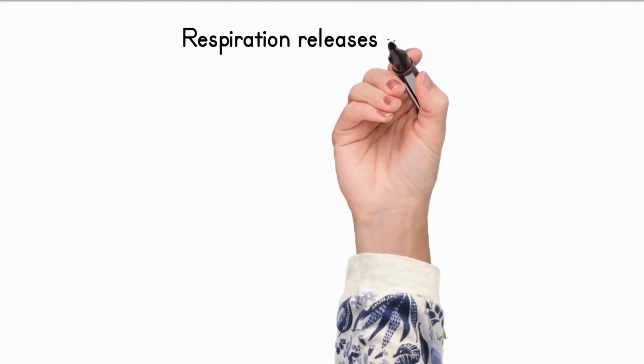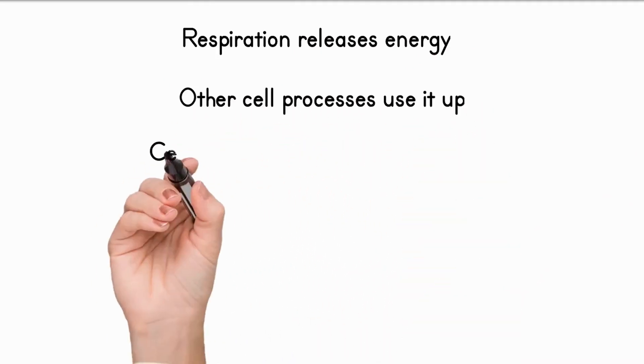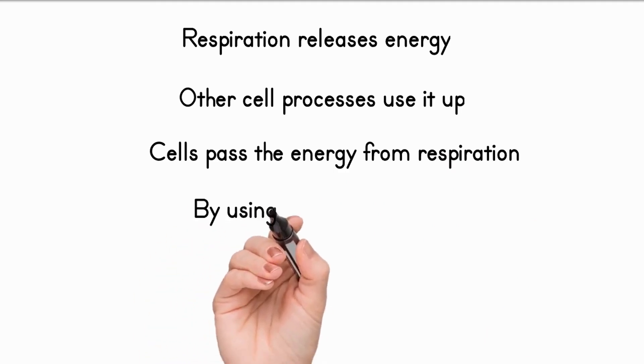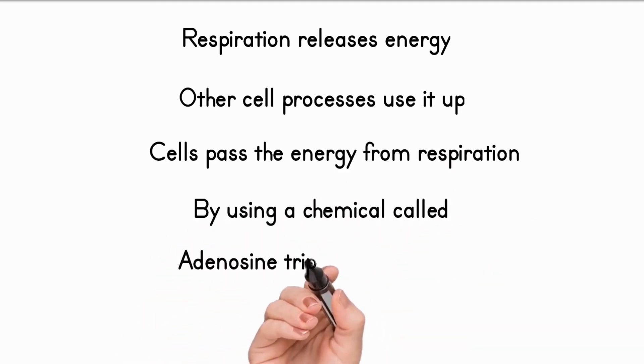Respiration releases energy while other cell processes use it up. Cells have a way of passing the energy from respiration to the other processes that need it. They do this using a chemical called adenosine triphosphate, or ATP.